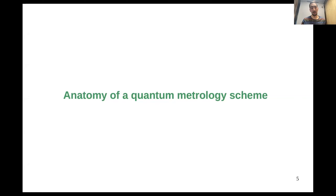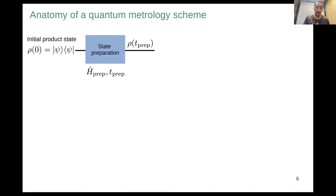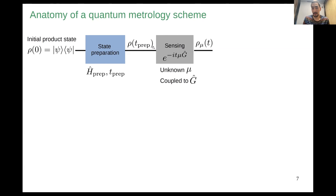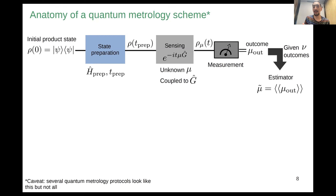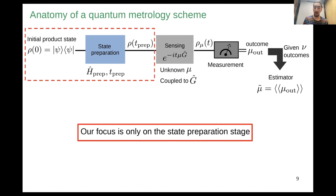State preparation is only one stage within a whole quantum metrology scheme. A usual scheme goes: you start with an initial state that undergoes time evolution up to some finite preparation time to get your non-classical state. Then you have a sensing evolution that imprints the value of an unknown parameter mu into some observable property of your system. You make a measurement and learn something about that unknown parameter.